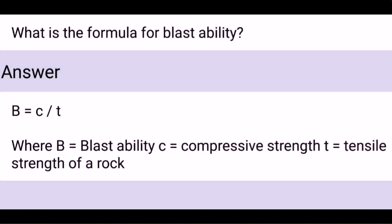What is the formula for blastability? B equals C divided by T, where B stands for blastability, C stands for compressive strength, and T stands for tensile strength of a rock.